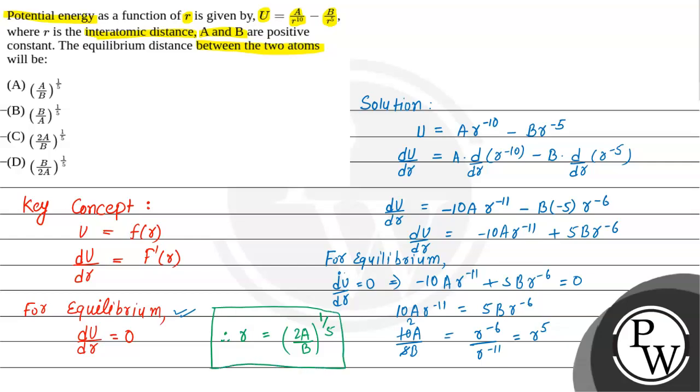If we see the options given, then we can say option C is the correct choice. I hope you understood the solution. Thank you.